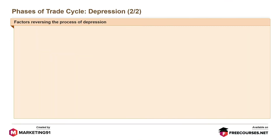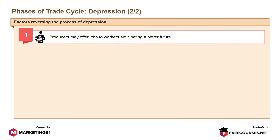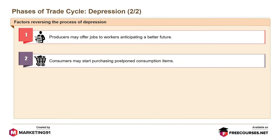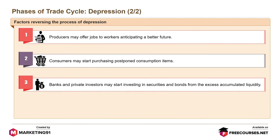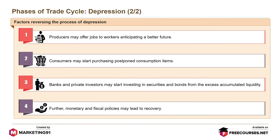Factors reversing the process of depression include: producers may offer jobs to workers anticipating a better future; consumers may start purchasing postponed consumption items; banks and private investors may start investing in securities and bonds from excess accumulated liquidity. Further, monetary and fiscal policies may lead to recovery.